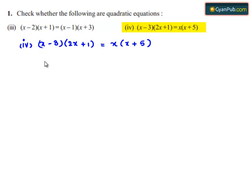So this can be written as x times 2x plus 1 minus 3 times 2x plus 1. This is equal to x times x plus 5.